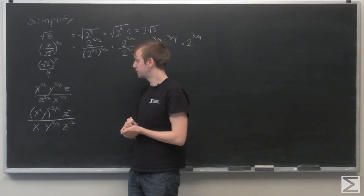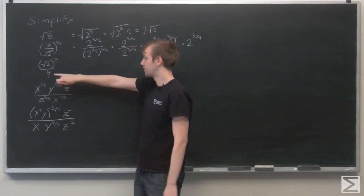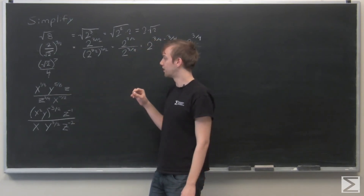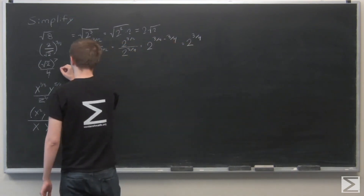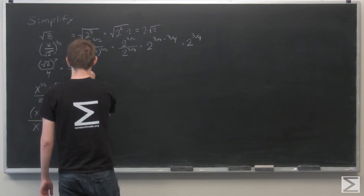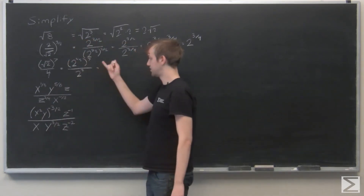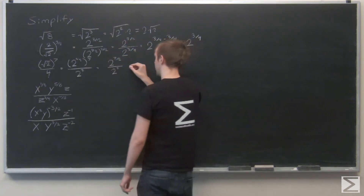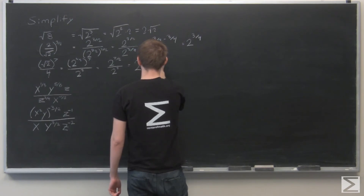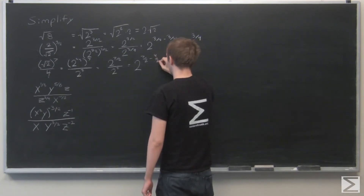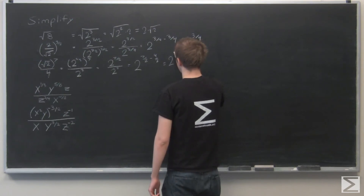Next: the square root of 2 to the seventh, over 4. Since 4 is a power of 2, there will be canceling. Write the square root of 2 as 2 to the one half, so we have 2 to the one half to the seventh over 2 squared. Multiplying the exponents gives 2 to the 7 halves over 2 squared. Subtracting: 7 halves minus 2 — since 2 equals 4 over 2 — gives 7 halves minus 4 halves, which equals 2 to the 3 halves.